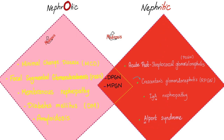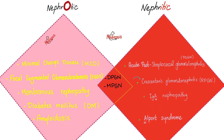Take Alport syndrome for example. This is a genetic disease with cataracts in the eye and nephritic syndrome. You can see blood in the urine, elevated BUN and creatinine, and maybe periorbital edema. You would see cataracts — and what else? Sensorineural deafness.